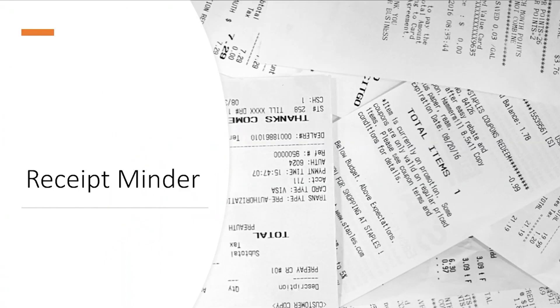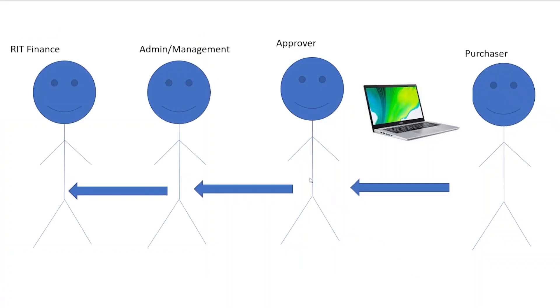Introducing Receipt Minder. Receipt Minder is a web-based process for handling these receipts. The purchasers upload a receipt to their system. The approvers are sent a notification to approve them. The admins review the receipts, generate the packet automatically before forwarding it to RIT Finance, making their process way faster.